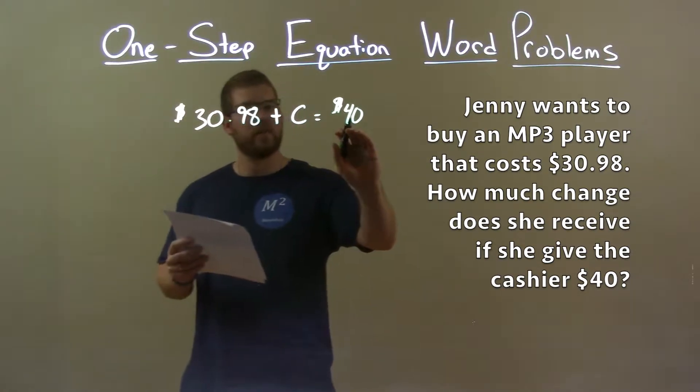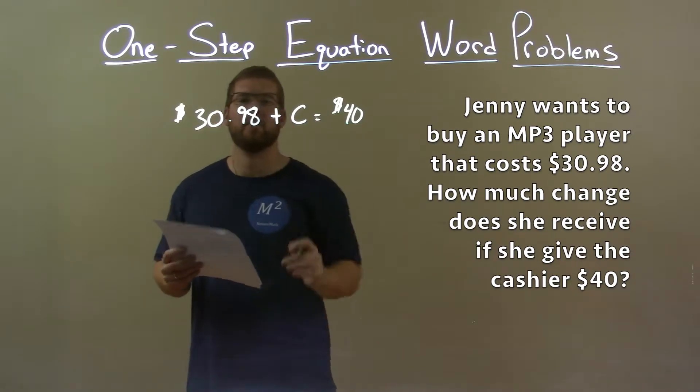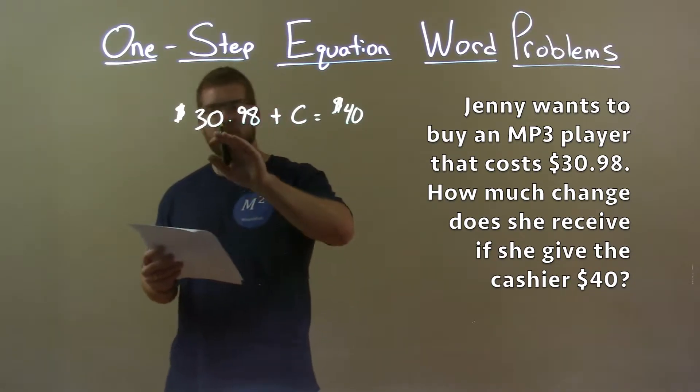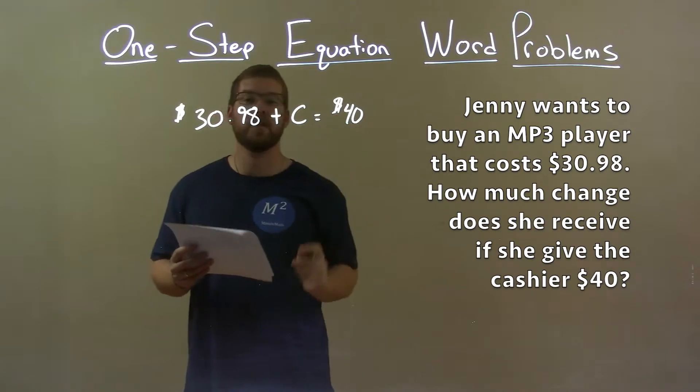$40 is what she gave the cashier. There's a cost of $30.98 and we need to find the change. So the cost of the MP3 player plus the change should equal $40.